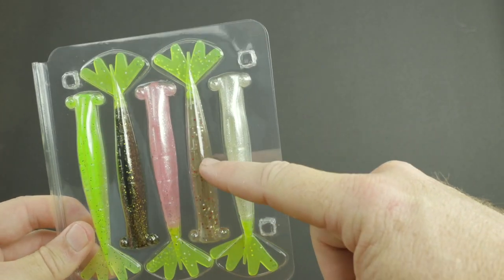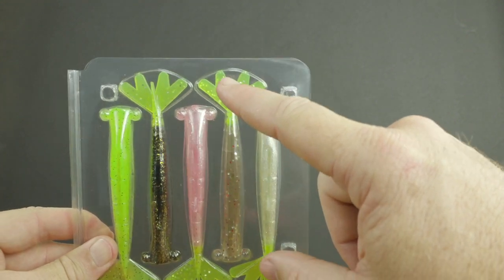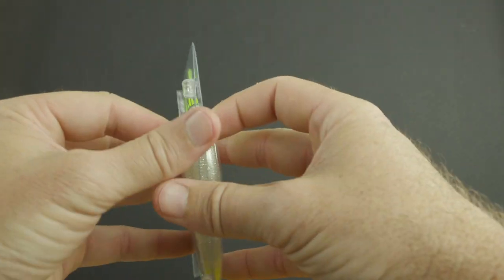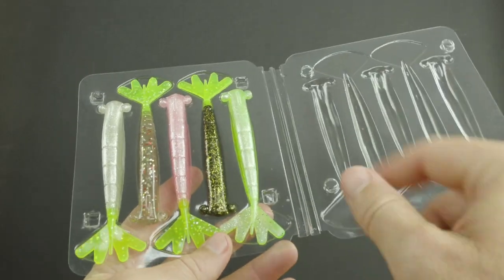The first one we did was this one right here, it's called the shrimp truce - it's natural with the chartreuse tail. This has become one of our top sellers.